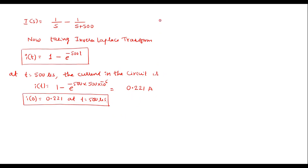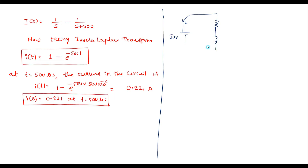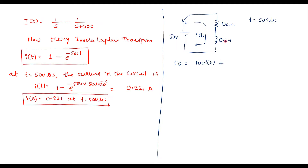Now let me draw the equivalent circuit at t equal to 500 microseconds. The switch is connected, and here we have a voltage source of 50 volts, a 100-ohm resistor, and an inductor of 0.2 henry. The current in the circuit is I of t. At t = 500 microseconds, the initial current is 0.221 A. Let me apply KVL to this loop: 50 = 100 I(t) + L di(t)/dt, where L = 0.2.